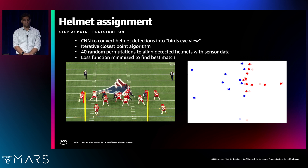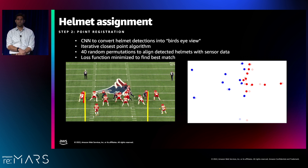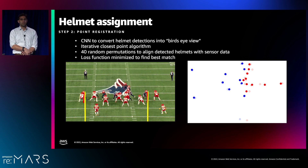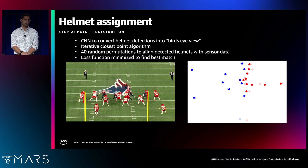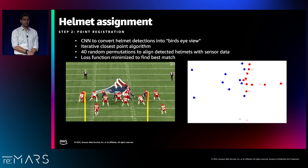Next we do point registration. We use a CNN neural network to convert helmets into a bird's eye view format, then apply an algorithm similar to iterative closest point to find the best match between the helmet points and the NGS data points. For each frame, this process runs 40 different random permutations to minimize the loss between the two sets of points. The light labels are the NGS data and the dark points are the detected helmets — and this looks like a pretty good match that the algorithm has found for this play.